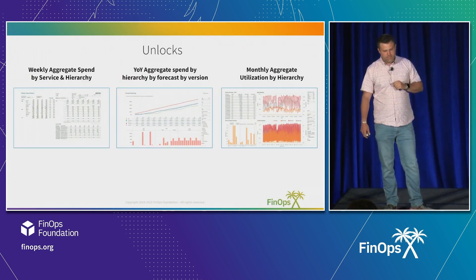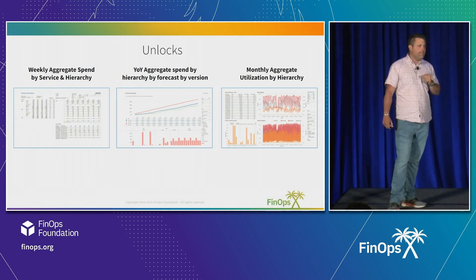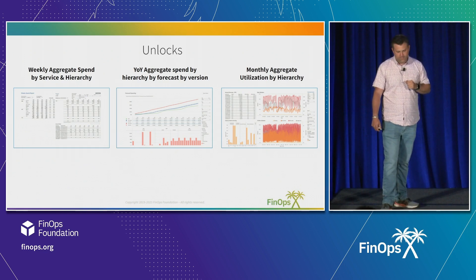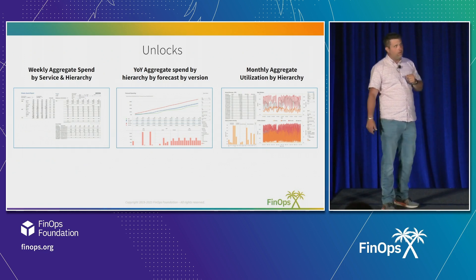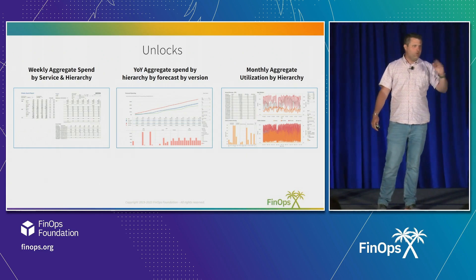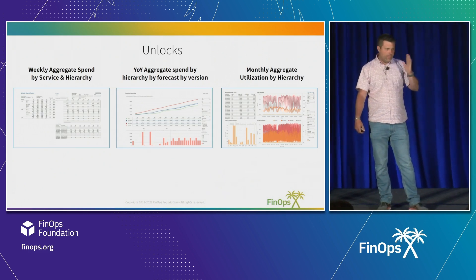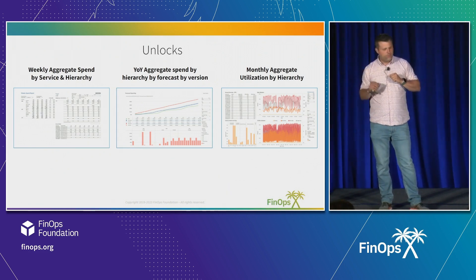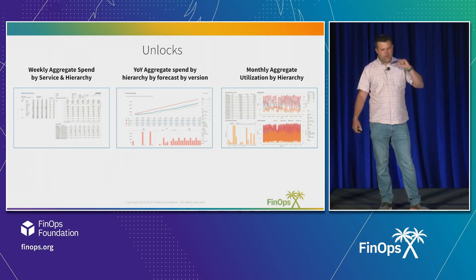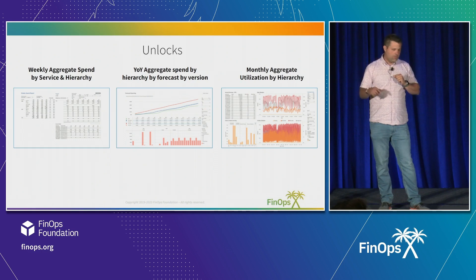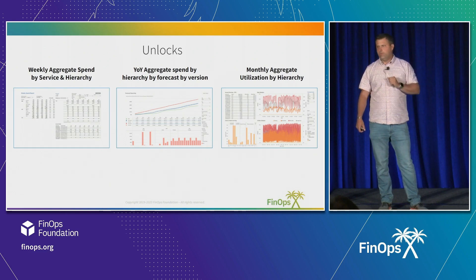We had three separate reports. The first one: weekly aggregate spend by service and by hierarchy. On a week-to-week average, do you know what your third-party account or public cloud account is exhibiting? Instead of going into a different interface, using a different tool, and a different Excel spreadsheet, we brought all that into one place and took them by service. If you have compute or object store, we can present that in a way that makes sense, with a week-to-week view showing percentage increases or decreases.